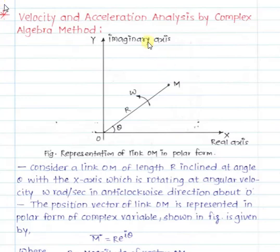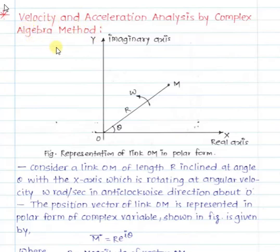In this video we are going to study the complex algebra method. In earlier videos we studied kinematic analysis, which is the branch of theory of machines dealing with the study of motion. There are two types of methods: the graphical method and the analytical method. The analytical methods include: first, the analytical method for the slider crank mechanism; second, the complex algebra method; and third, the vector algebra method.